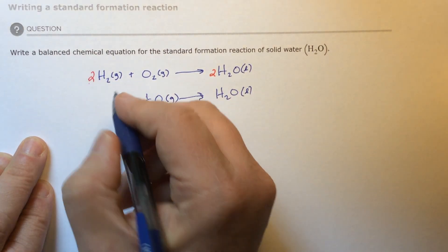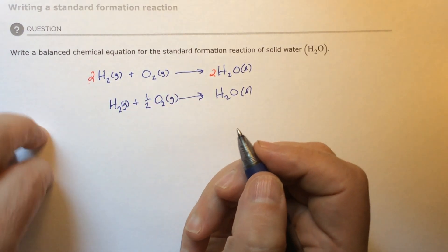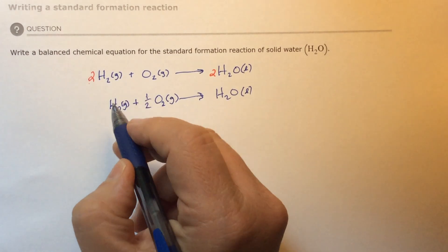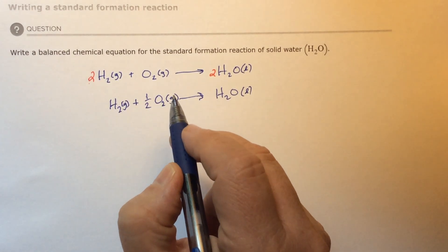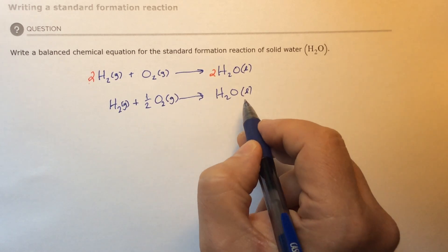And then two divided by two is going to be H2. And I think we're done. It's that easy. It's going to be H2 gas plus one half O2 gas yields H2O liquid.